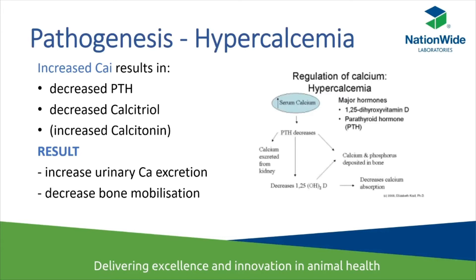With high ionized calcium in a state of hypercalcemia, the normal response is decreased PTH or parathyroid secretion from the parathyroid gland, and decreased calcitriol or vitamin D activation from the kidneys. This should result in increased urinary calcium excretion and decreased mobilization of calcium from the bone.